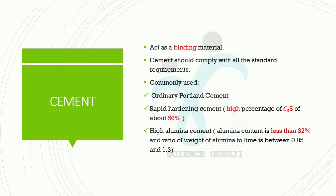The first type is Ordinary Portland Cement, which is a very familiar one. That is rapid hardening cement, with C3S content at 56%. Next is high alumina cement, where the alumina content is 32%. The ratio of weight of alumina to lime is between 0.85 and 1.3.